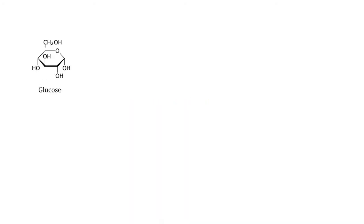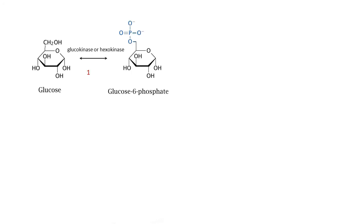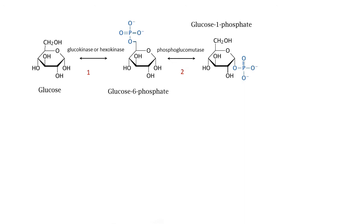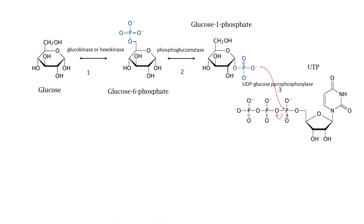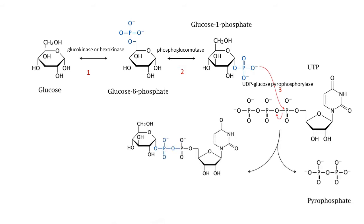Moving on to the steps of the glycogenesis pathway. Glucose is converted into glucose-6-phosphate by glucokinase or hexokinase. Glucose-6-phosphate is then converted into glucose-1-phosphate by phosphoglucomutase, passing through an obligatory intermediate step of glucose-1,6-bisphosphate. Phosphoglucomutase also acts in reverse when a large concentration of glucose-6-phosphate is present. The resulting glucose-1-phosphate is converted into UDP-glucose by uridyl transferase, also called UDP-glucose pyrophosphorylase, with pyrophosphate formed and hydrolyzed by pyrophosphatase into two molecules of inorganic phosphate.